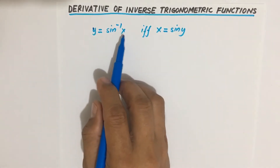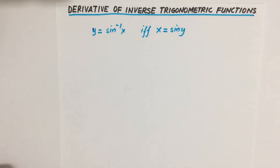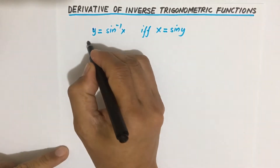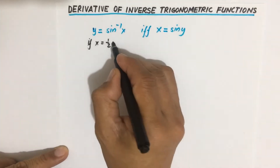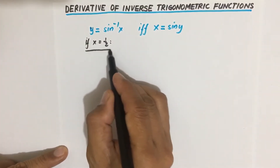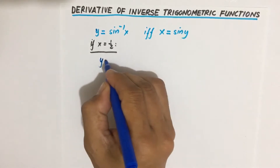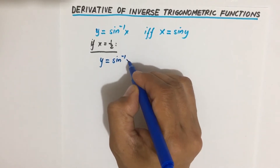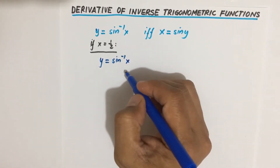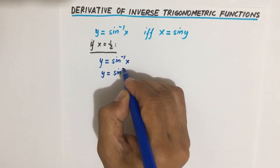So, y equal to inverse sine of x if and only if x equal to sine y. For example, if you let x be equal to one half, then we will have y equal to inverse sine of x, so y equal to inverse sine of one half.